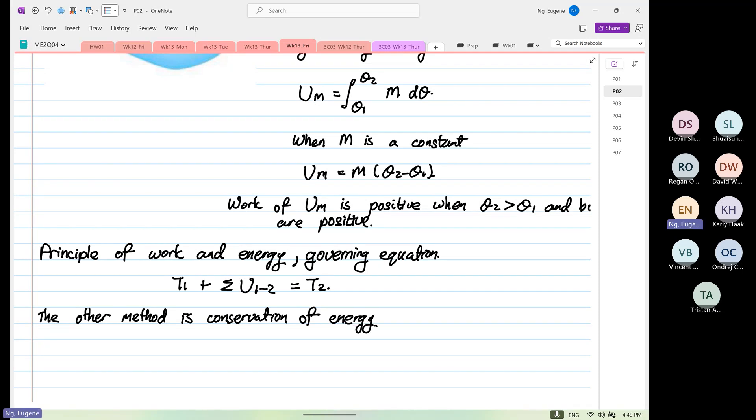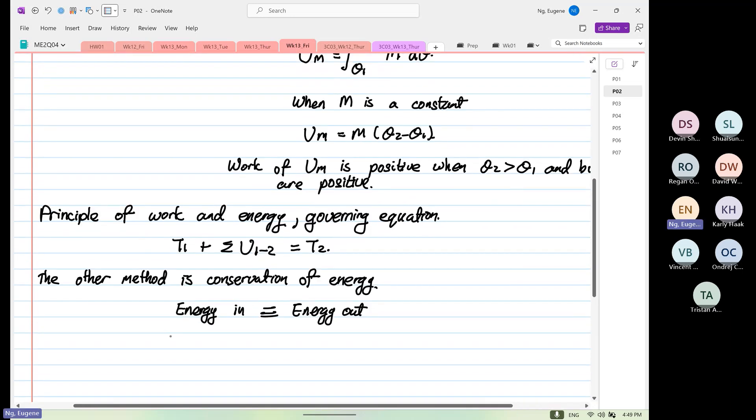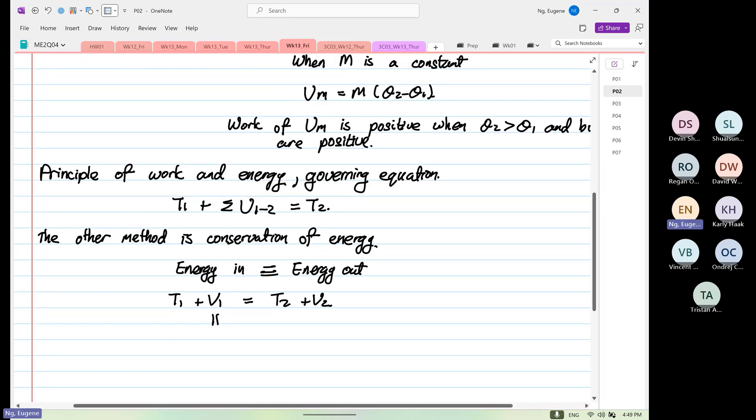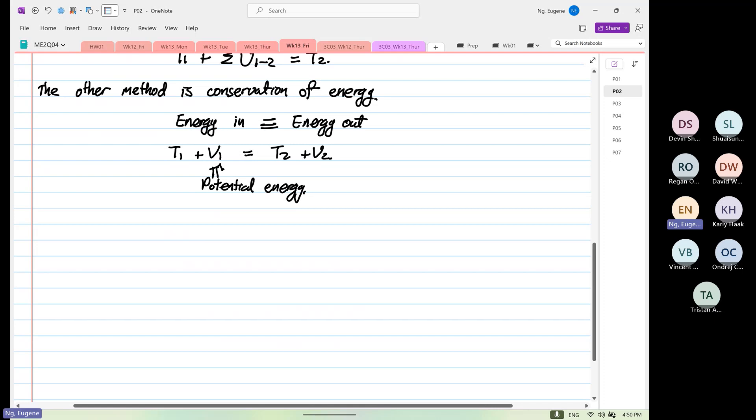And in conservation of energy, what you have is energy in must be equal to energy out, like thermodynamics. Are you taking thermodynamics this term or not yet? Some of you are taking thermodynamics. That rule stands, so what is stated is T1 plus V1 is equal to T2 plus V2. So you know what is your T, the V is your potential energy. So the other method is conservation of energy.